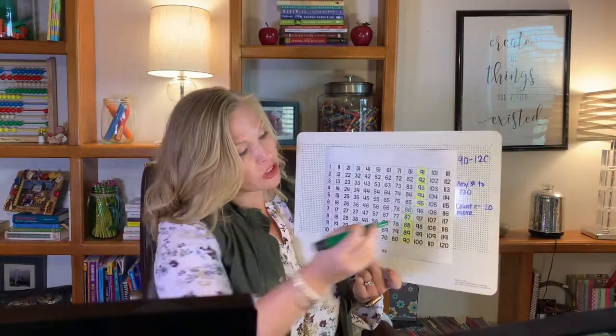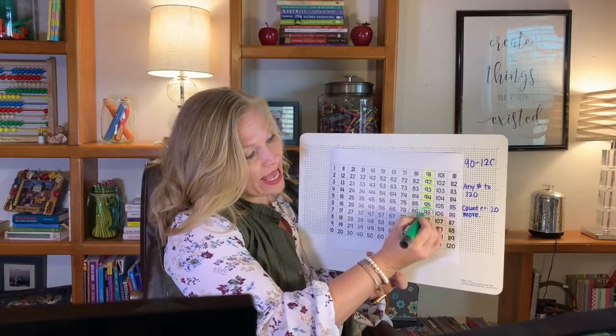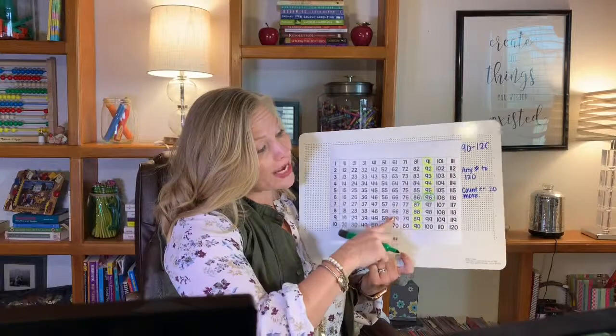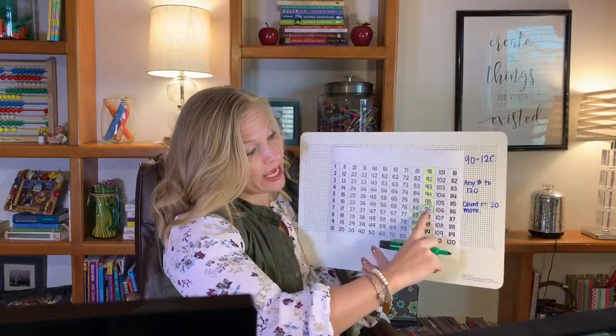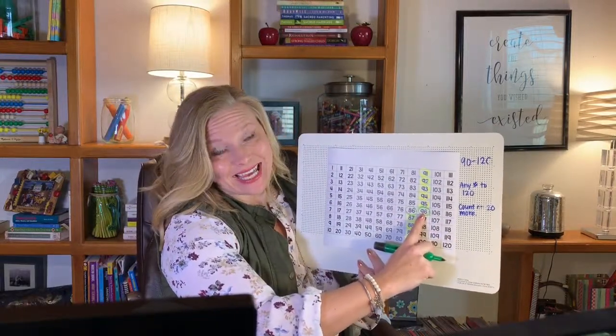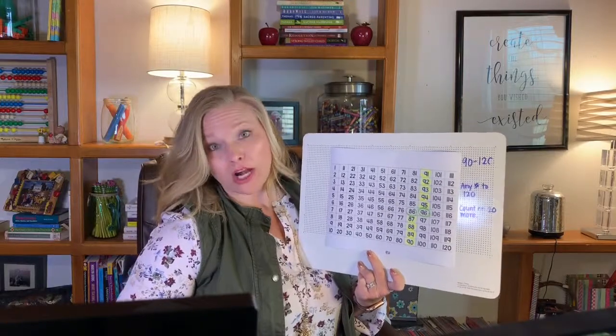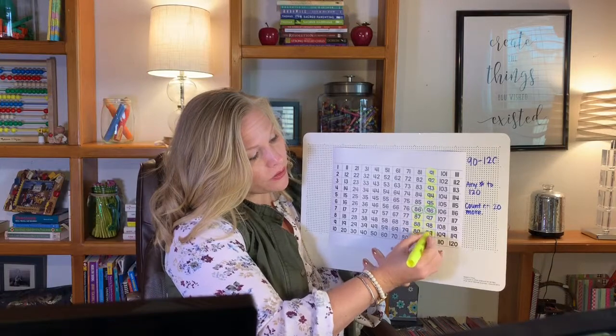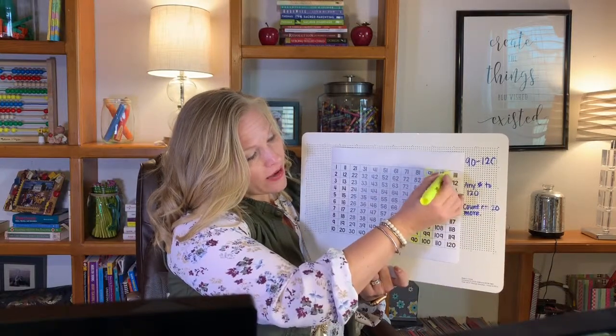And then before I get to 96, I'm going to change my color again. 10. So every time I say that 10, I'm going to circle with a different color. So I counted on one more ten and I got 96. Boys and girls, let's count on our second ten. Count with me. 1, 2, 3, 4, 5, 6, 7, 8, 9.